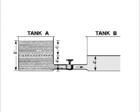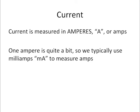So looking back at our analogy here, we've defined voltage as that difference in potential between Tank A and Tank B. So now what's the rate that that difference there equalizes or what's the rate at which the liquid flows from Tank A to Tank B? We know that as current and current is measured in amperes or also we call it amps. One ampere is quite a bit. So typically we use milliamps to measure amps.